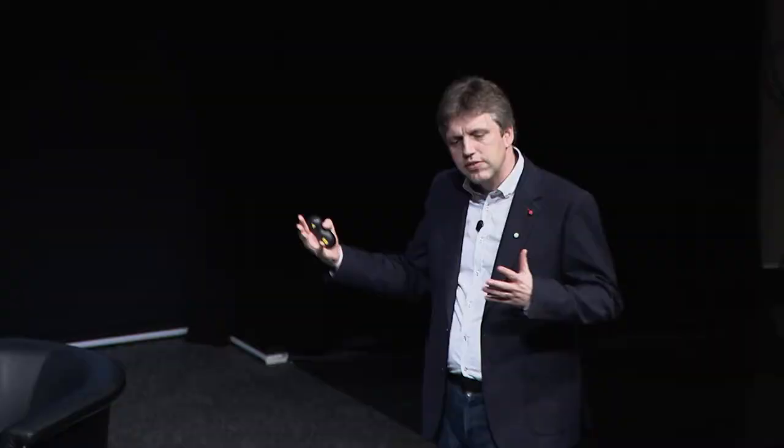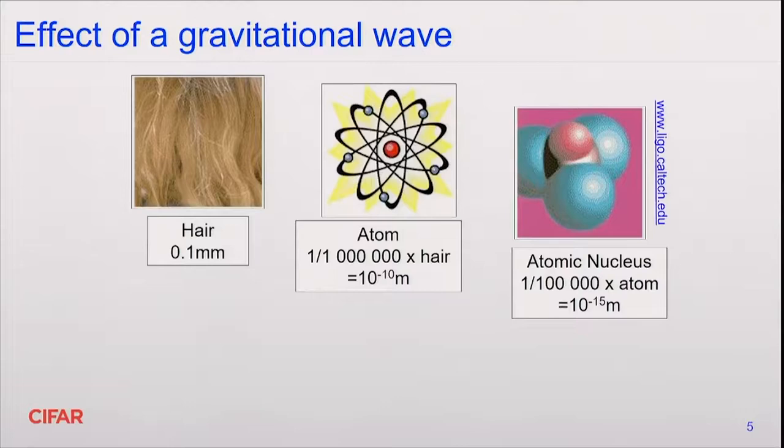To get a sense of how minute these distortions actually are — and this movie was exaggerated — I need to remind you of a few small things. Starting with a human hair, which has a diameter of about 0.1 millimeters, or about a million atoms across, and an atom itself has a very tiny nucleus in the middle that is only about one hundred-thousandth times the size of an atom.